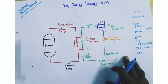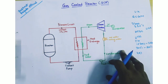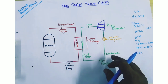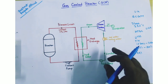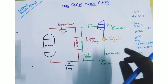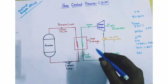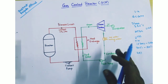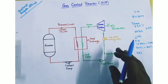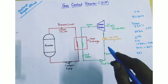Disadvantages of the gas cooled reactor: First, gases have a lower heat transfer coefficient, thus requiring a large heat exchanger. Second, fuels have to be operated at a high temperature.